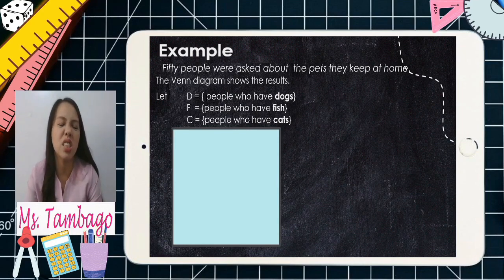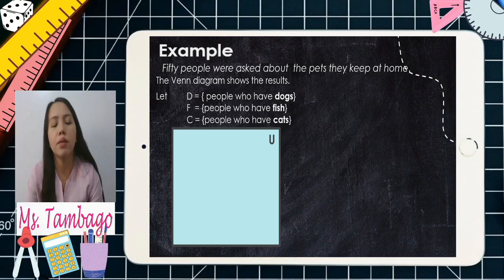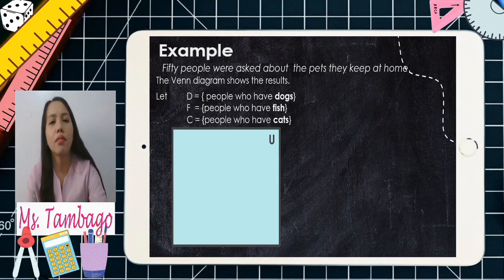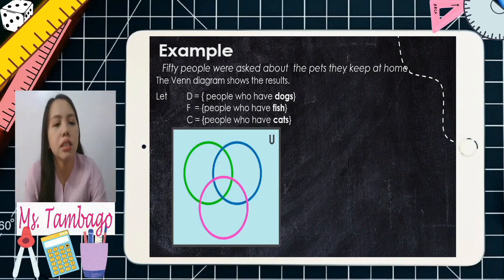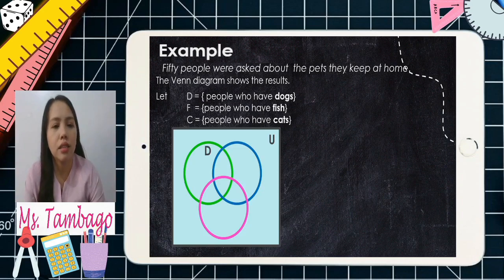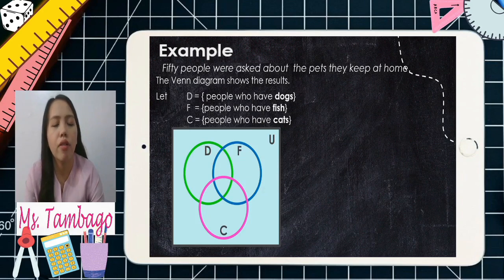First, let's have a rectangle — it looks like a square here, but it's the same. You can use a rectangle or a square. We have three overlapping circles: the green circle for Set D (dogs), the blue circle for Set F (fish), and the pink circle for Set C (cats). Those are the given data and numbers. Let's answer the following questions.